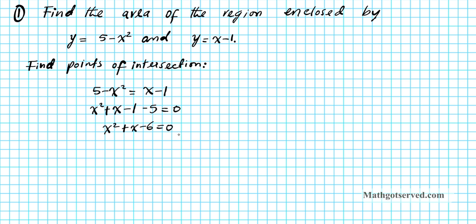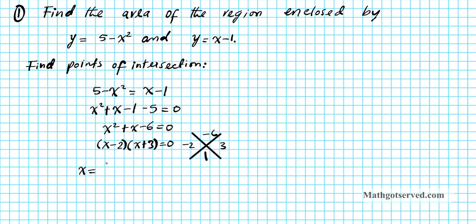Now let's factor this using the x-game. We think of two numbers that multiply to give negative 6 and add to give positive 1 — that's a variation of 2 and 3. For the product to be negative and sum positive, the smaller number has to be negative. So we have (x minus 2)(x plus 3) equals 0, giving x equals positive 2 and negative 3.